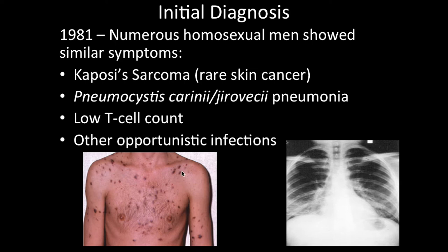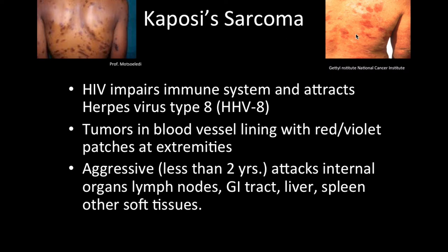Kaposi's sarcoma presents as patches of red or violet pigmentation on the skin — these are tumors in the blood vessel lining. You can see them all over the body. More aggressively, they can form inside organs such as the lymph nodes, GI tract, liver, spleen, and other soft tissues within less than two years, eventually causing organ failure and death. It's not the HIV virus itself that directly causes this condition; rather, HIV impairs the immune system and attracts herpes virus type 8, which causes Kaposi's sarcoma.